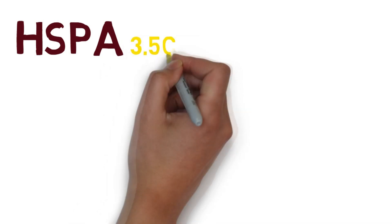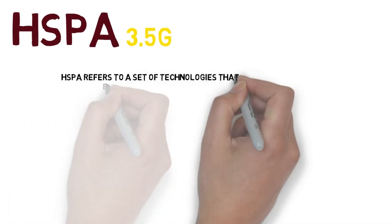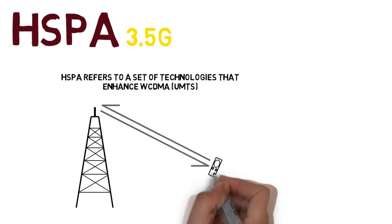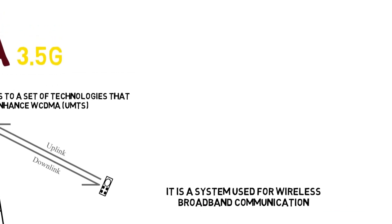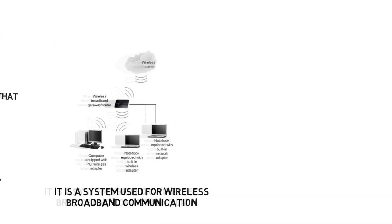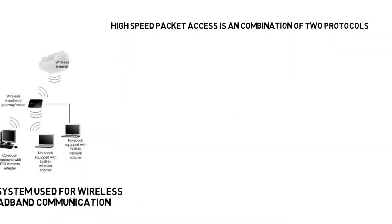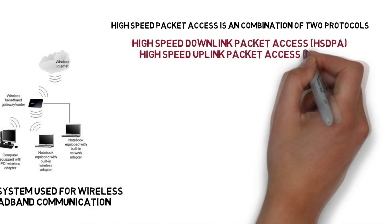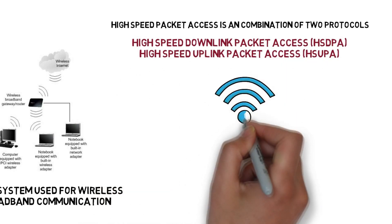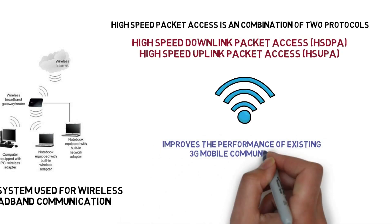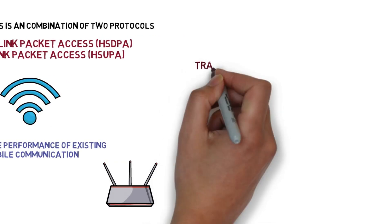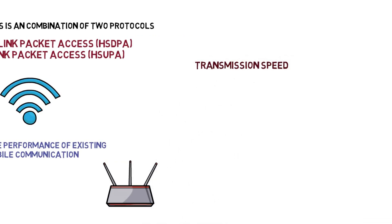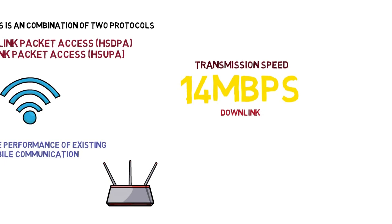HSPA, considered 3.5G, refers to a set of technologies that enhance WCDMA. It is a system used for wireless broadband communication. High Speed Packet Access is a combination of two protocols — HSDPA and HSUPA — which improve the performance of existing 3G mobile communication. Transmission speeds are 14 MB per second up to 40 MB per second for the downlink.